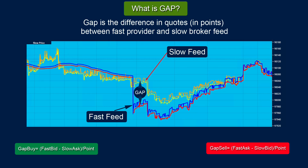The signal is calculated using the following formulas. For open buy order: Gap_buy equals (fast bid minus slow ask) divided by point. For open sell order: Gap_sell equals (fast ask minus slow bid) divided by point.